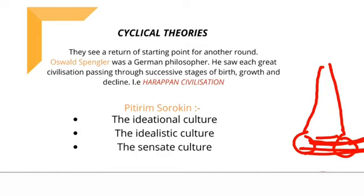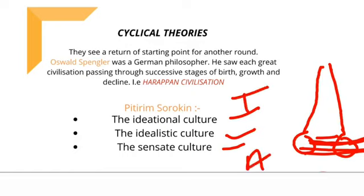Agar hum baat karein Pitirim Sorokin ke according — jo Russian sociologist hain — toh inhone teen mein baata hua hai: ideational culture, sensate culture, aur idealistic culture. Ideational culture woh hota hai jo guided hota hai by supernatural beliefs and values. Sensate culture woh hota hai jo materialistic cheezoon par zyada believe karta hai, na ki supernatural beliefs aur values par. Aur idealistic culture dono ka combination hota hai — thesis, antithesis, synthesis.